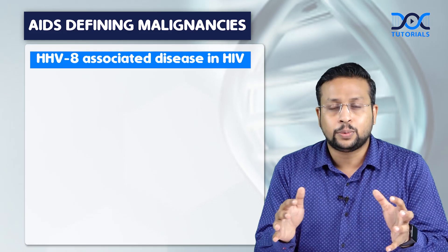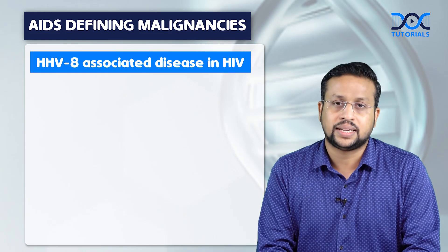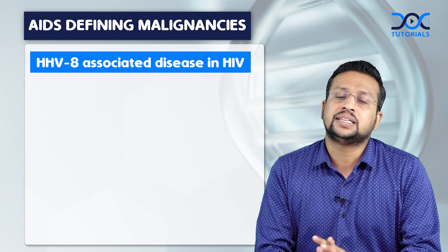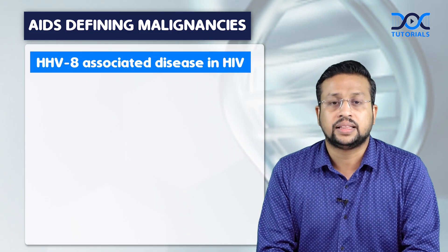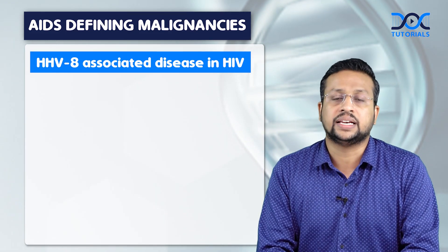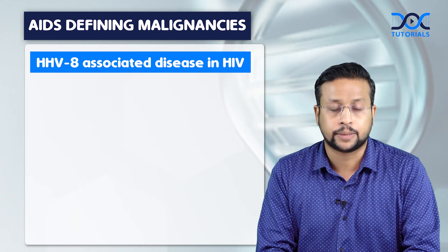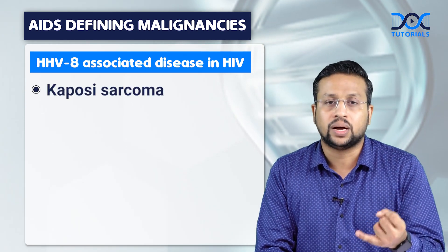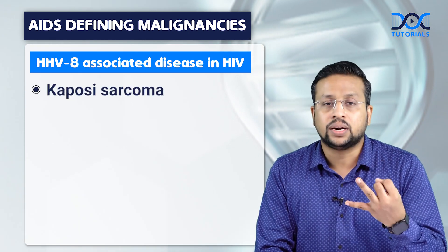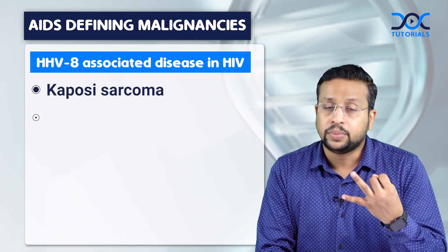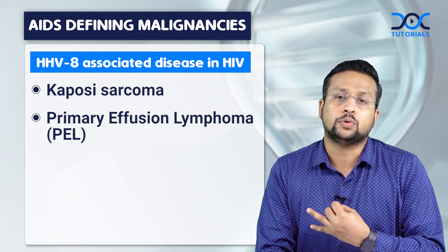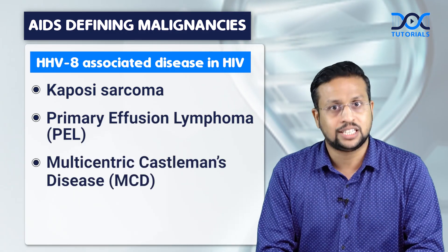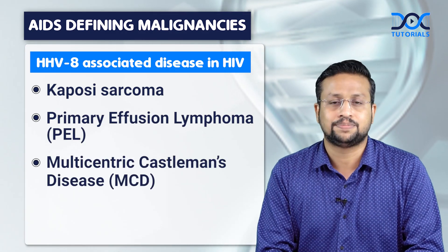When you talk about KSHV, that is HHV-8, there are three major diseases it can produce in HIV patients. The first one is Kaposi's sarcoma, the second one is primary effusion lymphoma, and the third one is multicentric Castleman's disease.